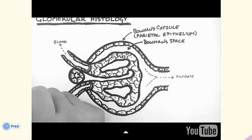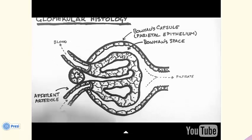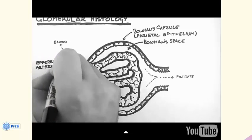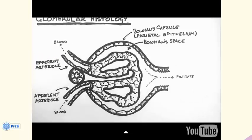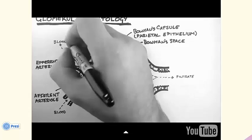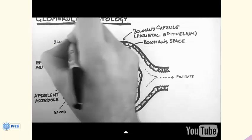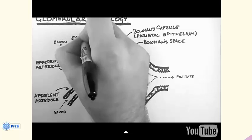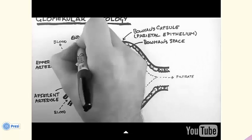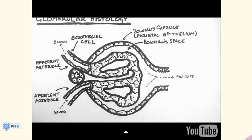The afferent and efferent arterioles can constrict and dilate in order to regulate the rate of filtration, known as the glomerular filtration rate, or GFR. And like all blood vessels, these arterioles are lined by endothelial cells — not to be confused with epithelial cells. They are a completely different type of cell and have a different embryological origin.